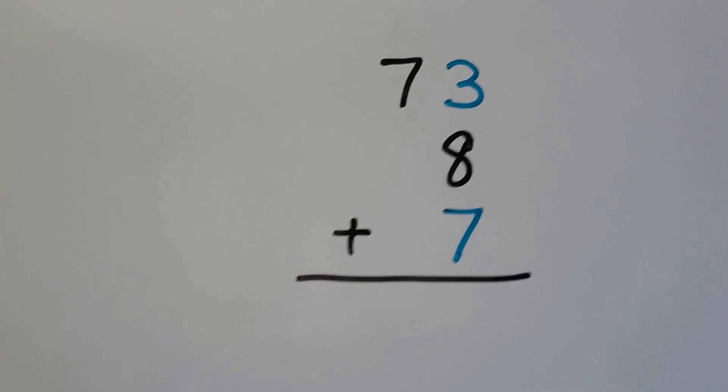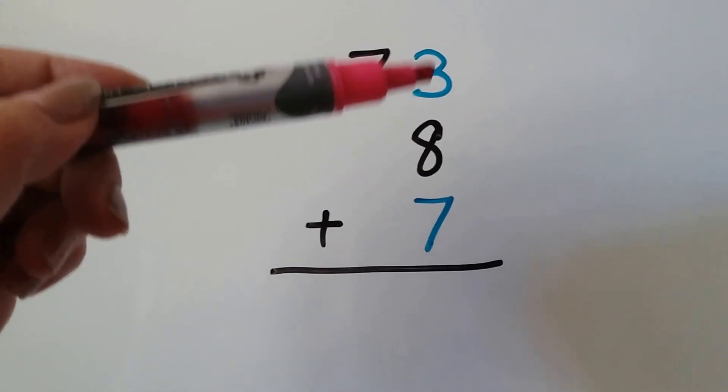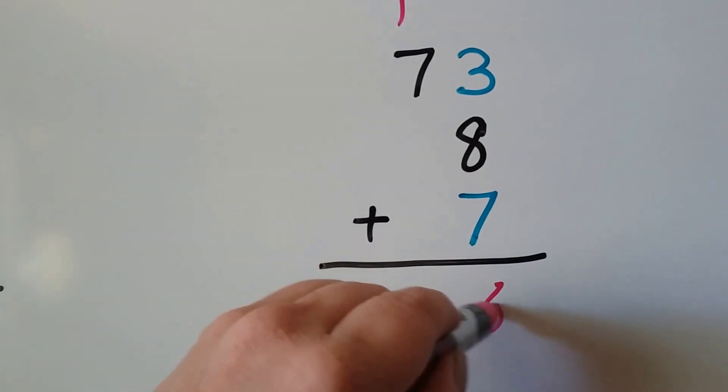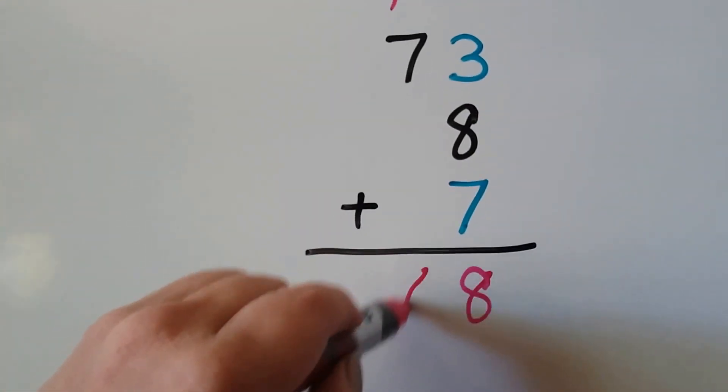Let's look at this one. We have two friendly numbers, a 7 and a 3: 7, 8, 9, 10. We add the 8, we get an 18. We add the tens: 7 and 1 is 8. It equals 88.